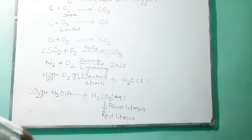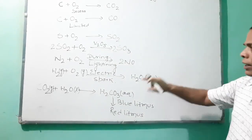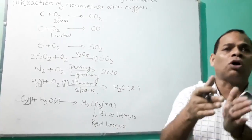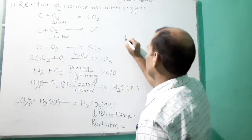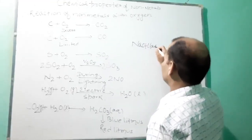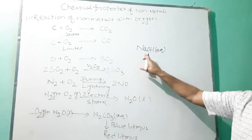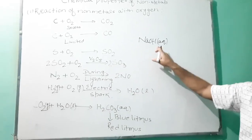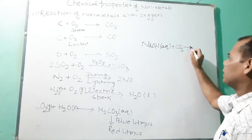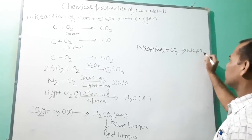This shows that carbon dioxide is acidic in nature. Also, when a non-metallic oxide reacts with a base it forms salt and water. For example, NaOH — sodium hydroxide, which is basic in nature — when it reacts with carbon dioxide, it forms salt and water.